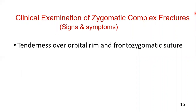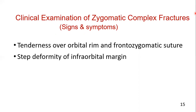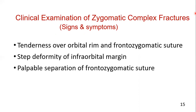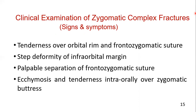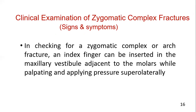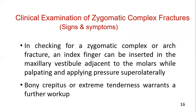Next, you will feel tenderness over the orbital rim and the frontozygomatic suture. There is a step deformity in the infraorbital margin, and you can palpate the separation of the frontozygomatic suture. Ecchymosis or tenderness intraorally over the zygomatic buttress — to examine this, you insert your index finger into the maxillary vestibule adjacent to the molar areas and palpate in a superior-lateral direction. Here you will feel crepitus, indicating a fracture of the zygomatic arch or zygomatic complex, and you will do further investigation to confirm your diagnosis.